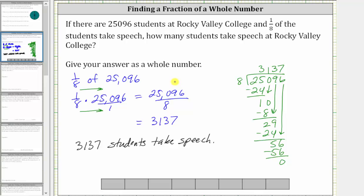Before we go, let's model what we just found. If you let this bar equal the total students of 25,096, since we divided by eight, each of these eight equal parts would be equal to 3,137 students. Each of these eight equal parts represents one-eighth of the total students, which is why one-eighth of 25,096 is 3,137.